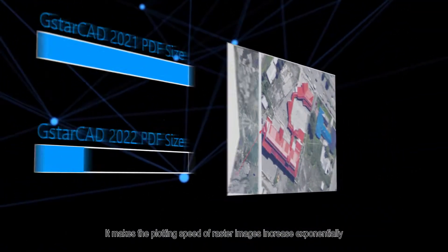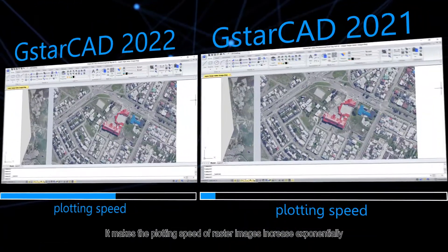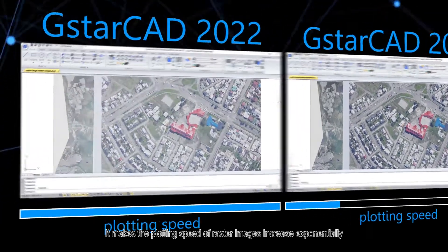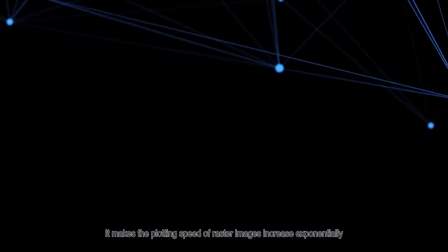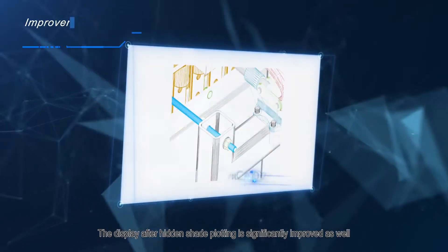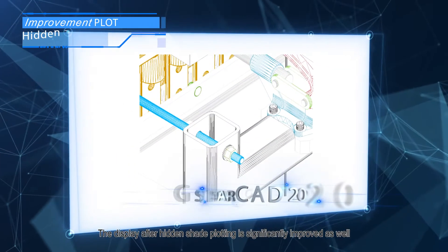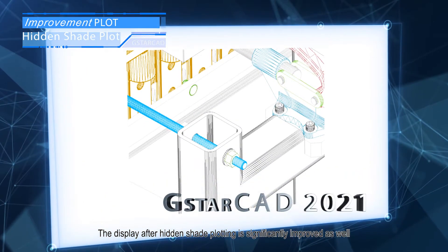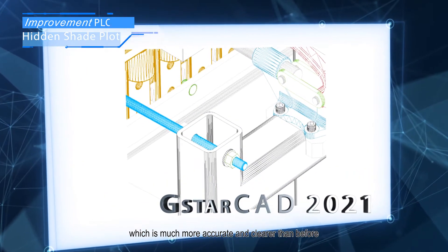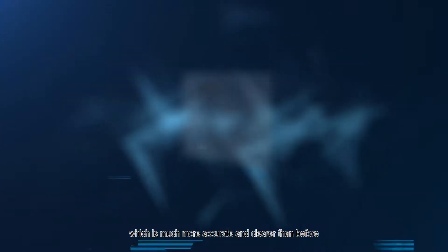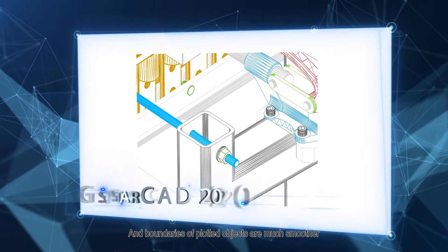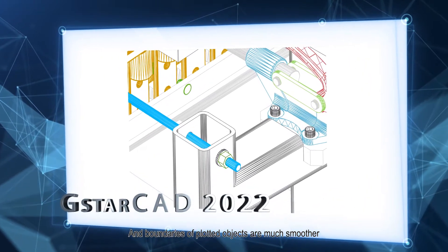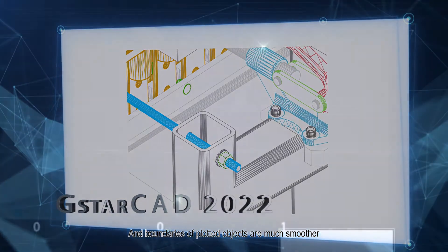It makes the plotting speed of raster images increase exponentially. The display after hidden shade plotting is significantly improved as well, which is much more accurate and clearer than before. And boundaries of plotted objects are much smoother.